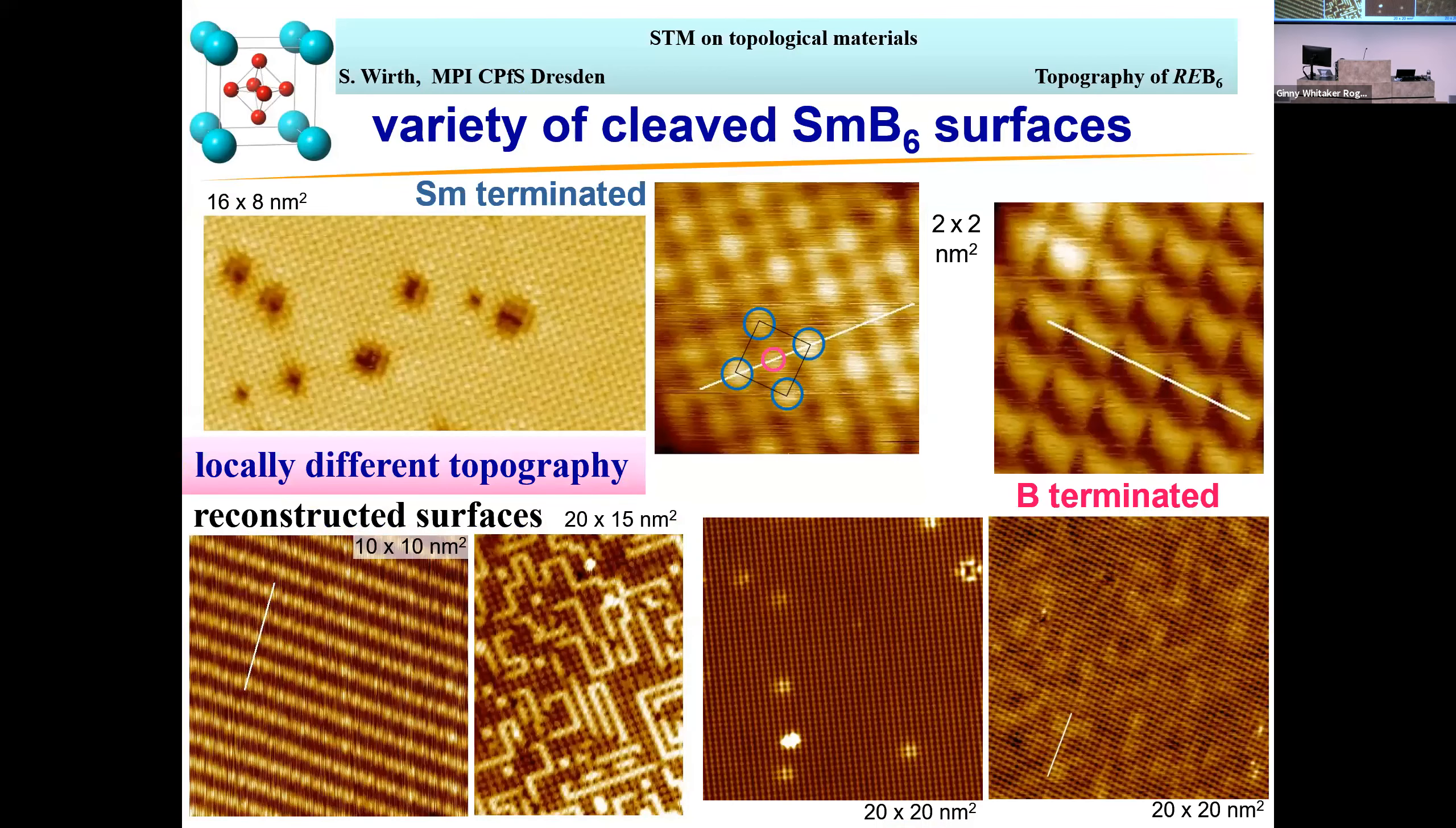It's really difficult to cleave these SmB6 samples, as was already pointed out. It took us several years to compile these surfaces. The vast majority of the surface is very rough, and only small patches are atomically flat. But we finally managed to see all three different types of surfaces: Sm-terminated, boron-terminated, and two-by-one reconstructed surfaces.